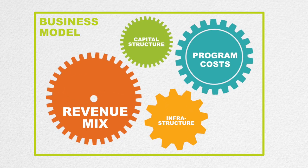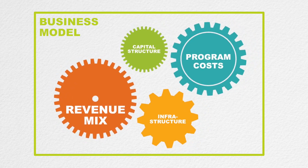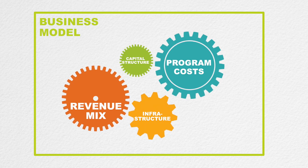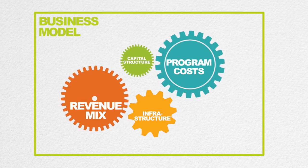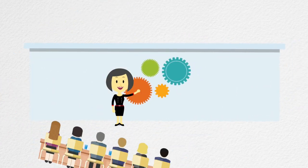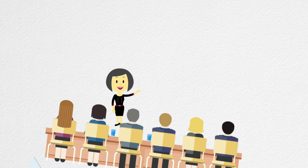Business models at nonprofit organizations are rarely fixed and unchanging. The structure and composition of revenue, expenses, and capital evolves over life stages and in response to external events and internal strategy. As a nonprofit leader, you must continually assess and prepare for the next iteration of your evolving business model, starting with understanding your current operating model.